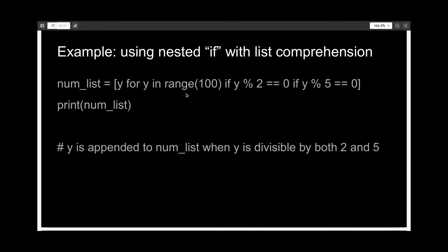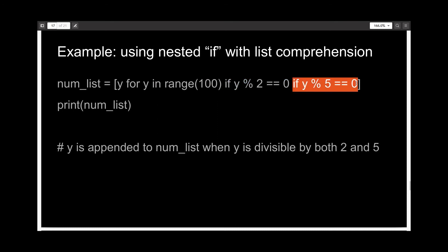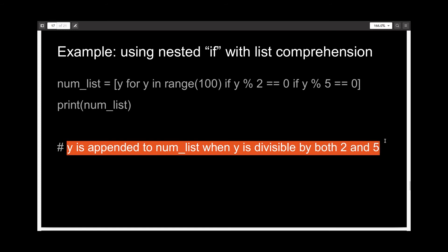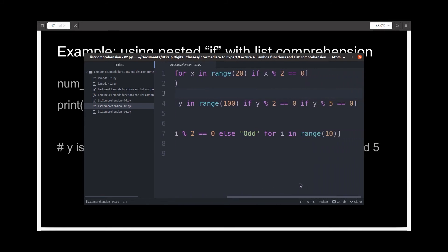You can also use nested if conditions. The variable num_list has the value y for y in range(100), so 0 to 100, if y modulus 2 equals 0 — meaning it is perfectly divisible by 2 — and if y modulus 5 equals 0, meaning it is also perfectly divisible by 5. So y will only be appended to num_list when y is divisible by both 2 and 5. I've written the same function over here on line 4 and 5.